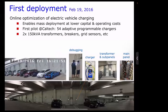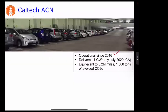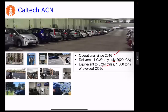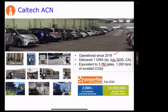The system was first energized in February 2016 as a test bed — things would break but people charged for free and were tolerant. Originally 54 chargers; now many more. By July 2020, the system had delivered one gigawatt-hour of electricity, about 3 million miles of driving. A company (PowerFlex) was started, deployed at various sites, and was subsequently acquired by EDF, the French utility company.